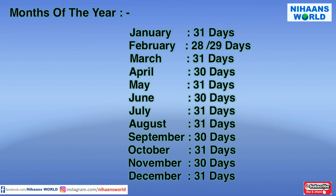Usually 365 days make a year. But once in 4 years, we get 366 days. That is called a leap year.